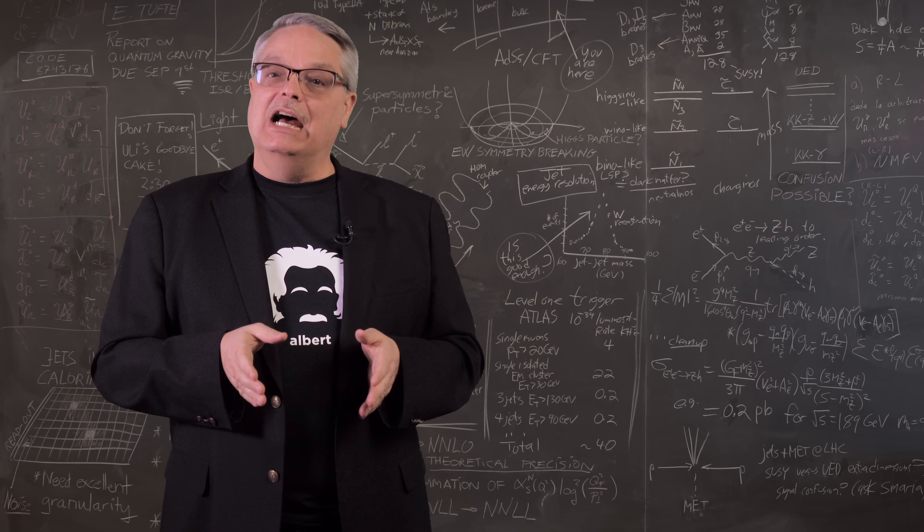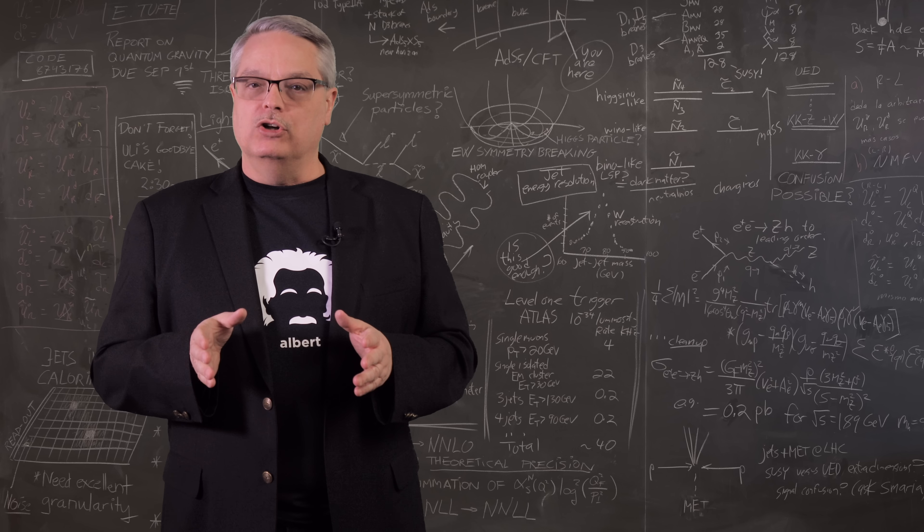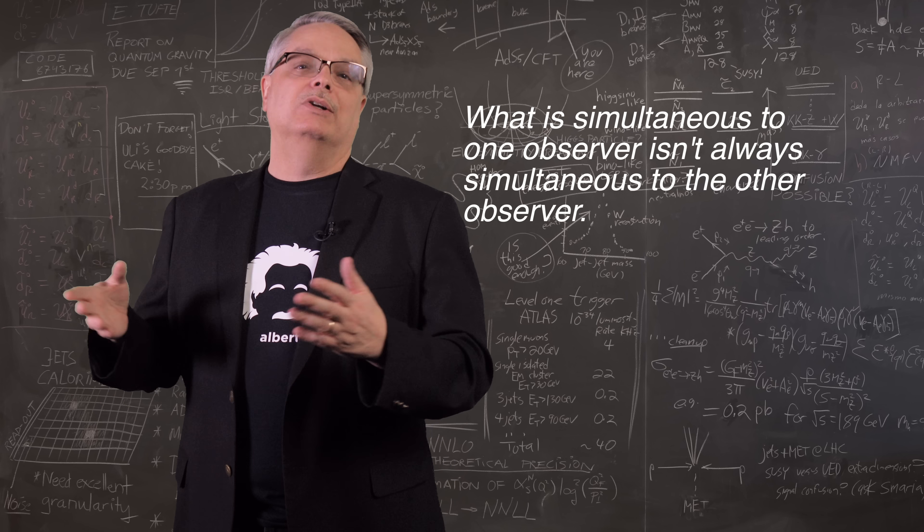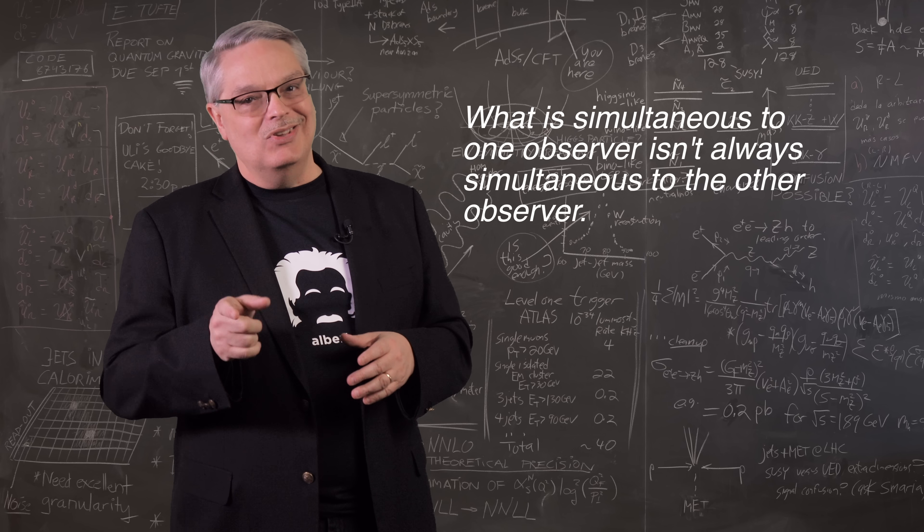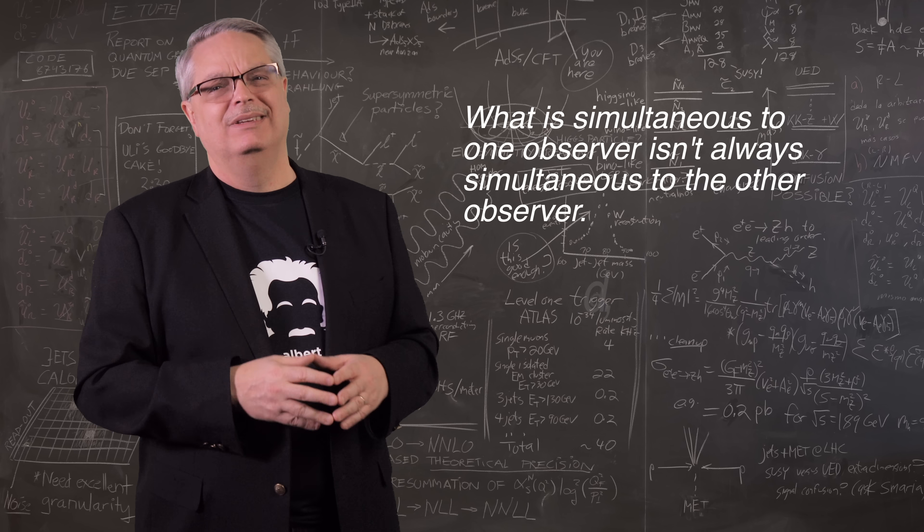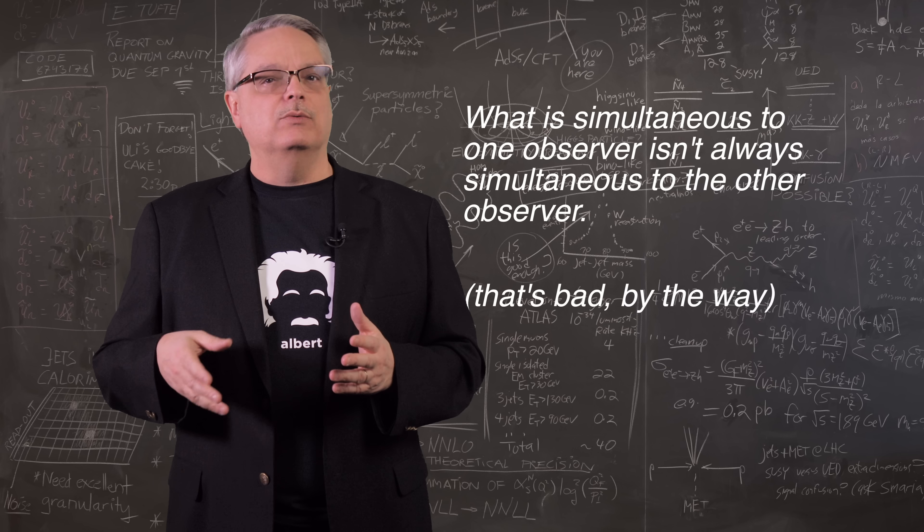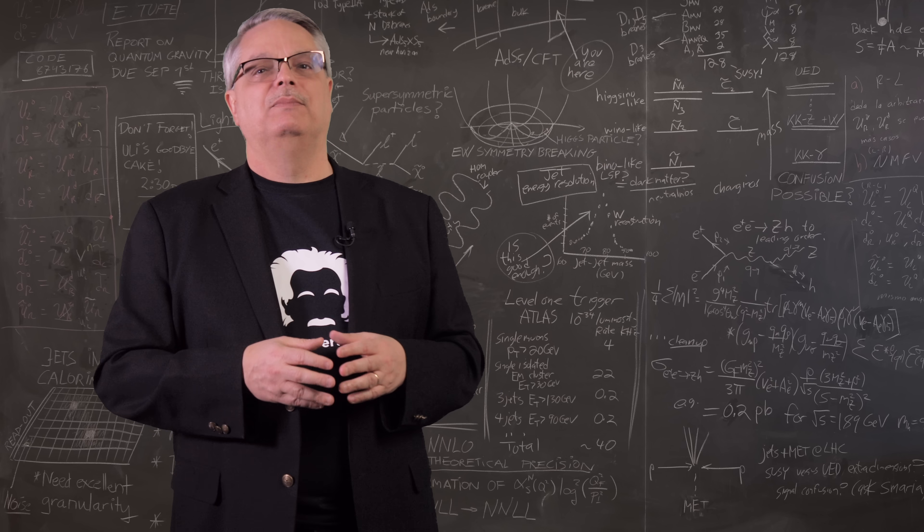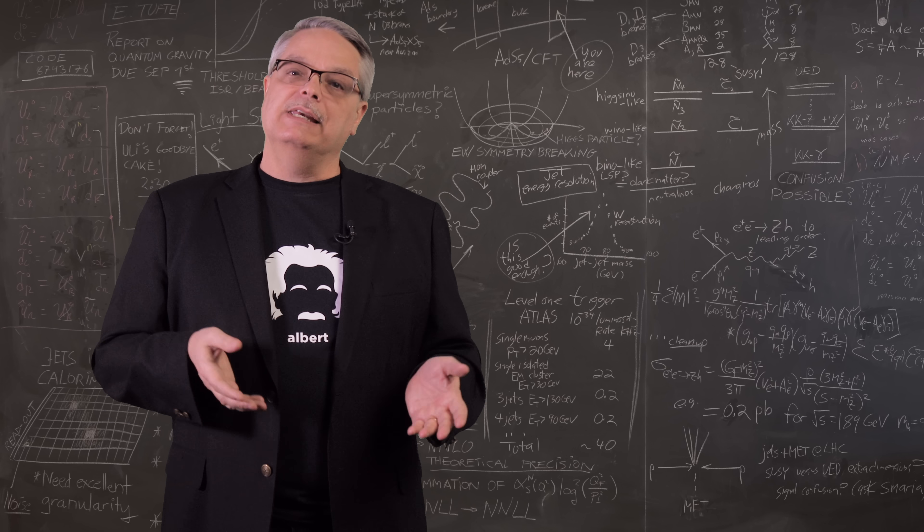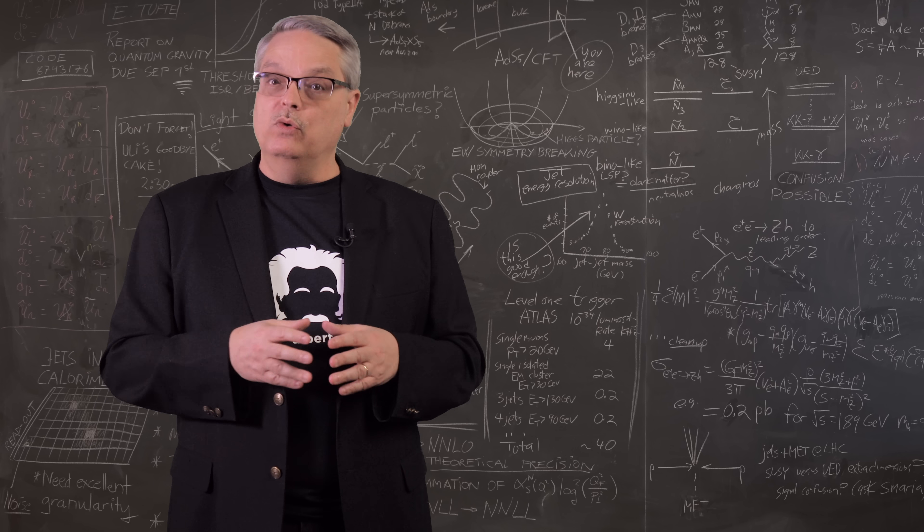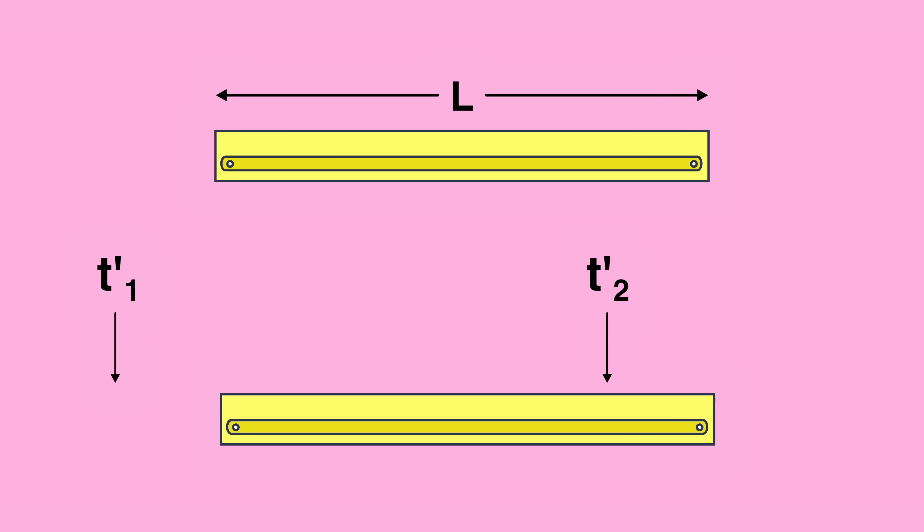Okay, so now we get to the very crux of the matter. First, and this is a biggie, two events that are simultaneous to the unprimed observer, the one who doesn't see the stick move, is not simultaneous to the primed observer. That just sounds weird, but it's true. It's also a big reason why people dallying with special relativity make so many mistakes.